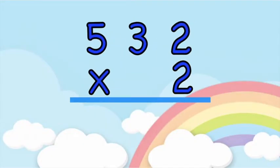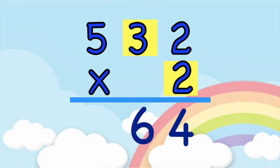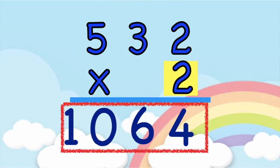So let's have this number: 532 times 2. First, we are going to multiply 2 and 2. 2 times 2, that is 4. Next, 2 times 3, that is 6. And then let's multiply the hundreds place. 2 times 5 — good job! It's 10. So the product is 1,064.